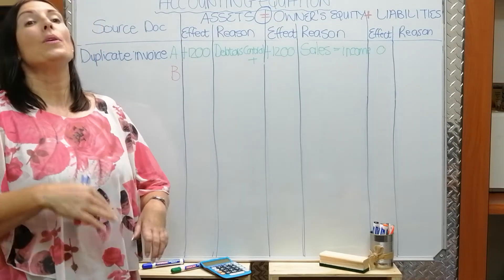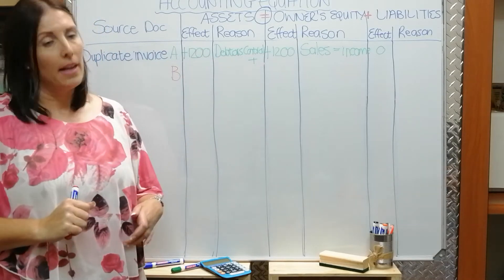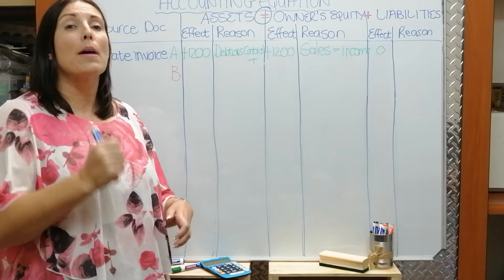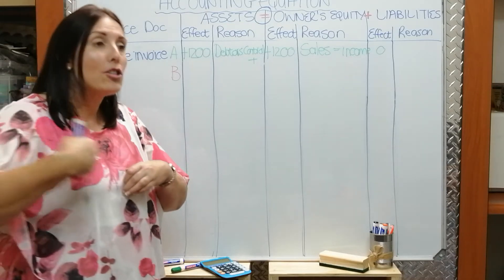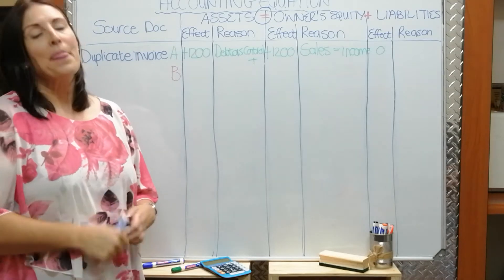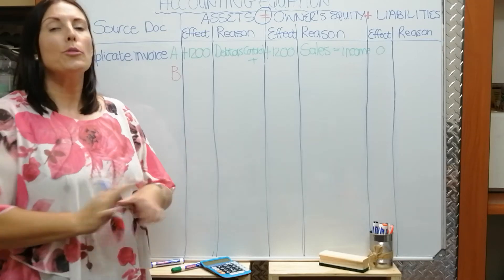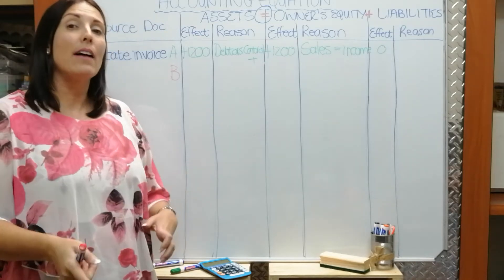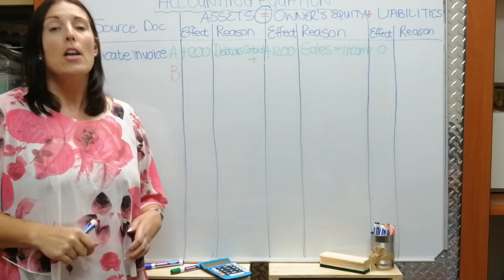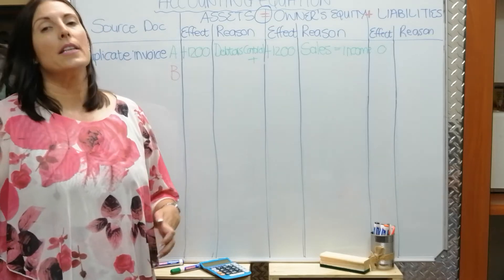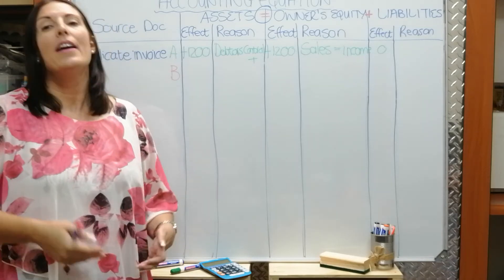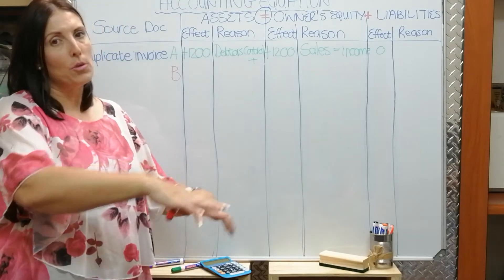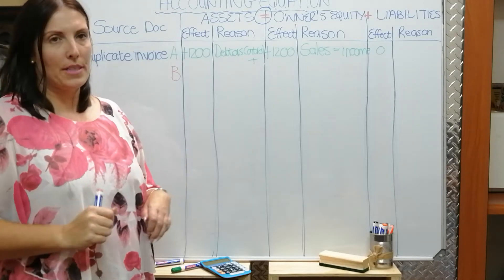In the A part we generated an income — we sold to somebody. In the B part, we need to show what did we give to that client. We didn't sell air to him — we gave that client some of our trading stock. So we need to write that stock out of the books of the business. When our business buys stock from wholesalers or suppliers, the price we pay is called the cost price. So when we sell the trading stock, we also need to write it out of our books at the cost price. That is why we work with the cost of sales amount.